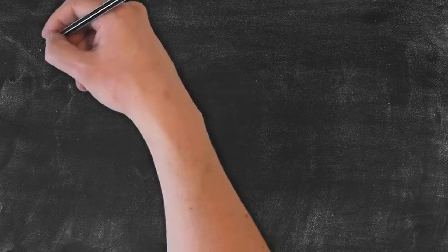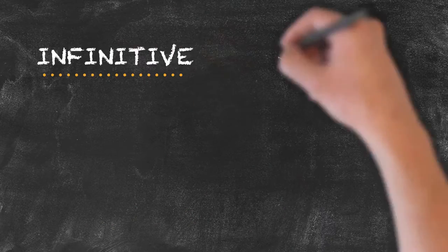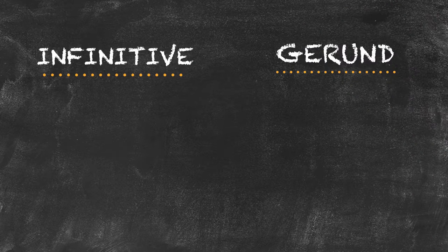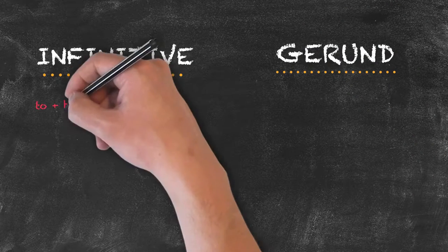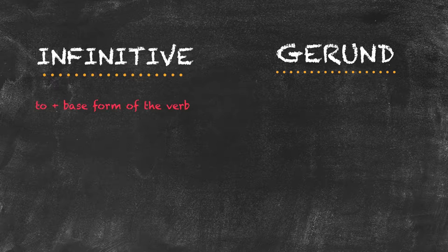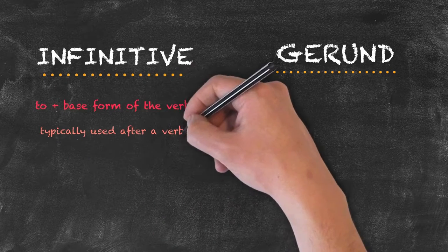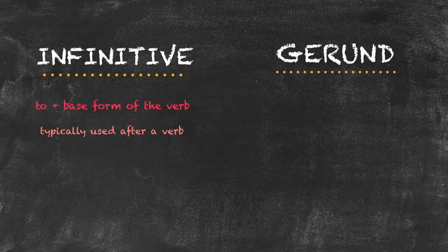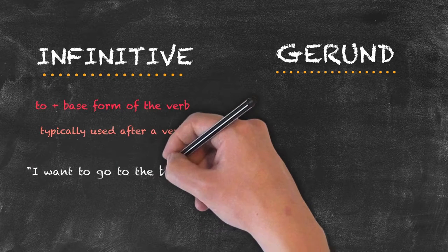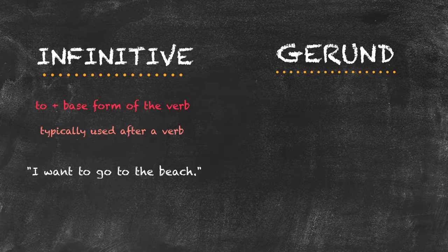Now we'll have a look at both the infinitive and the gerund. The infinitive is the word 'to' followed by the base form of the verb. We'll typically use it after a verb, specifically verbs like 'want' or 'hope'. We can make statements like: I want to go to the beach.